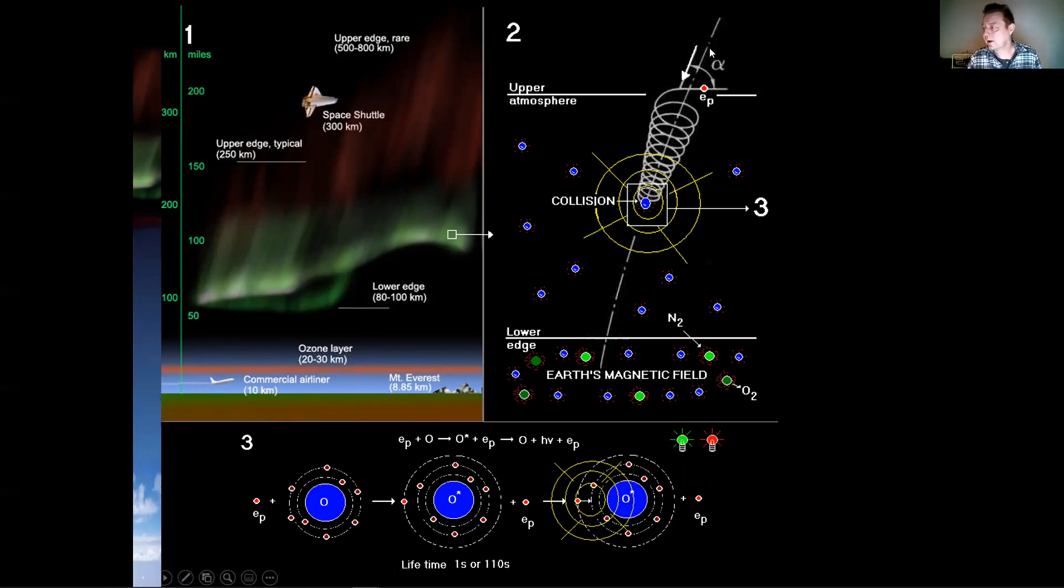If the energy is relatively low, the light that will be emitted is red at 6300 Angstrom, as you can see in the top of the aurora arc here.